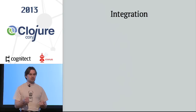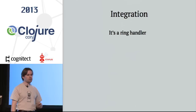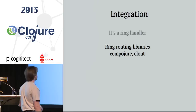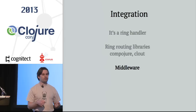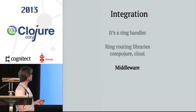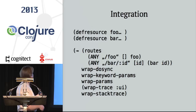Liberator doesn't live in its own world — it needs integration. In the demo I use Jetty to connect to the wire. It's a Ring handler — or more precisely, it generates a Ring handler — so it integrates well with the standard Clojure web development environment. You can use Ring routing libraries like Compojure or Clout, and Ring middleware — for example, for authentication, reloading, or session handling. A typical implementation has two resources defined with Liberator, a routing specification dispatching to the Liberator resources, wrap-params middleware, and wrap-trace to enable the Liberator tracing and debugging console.